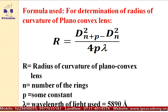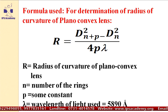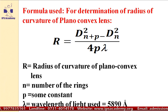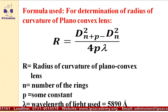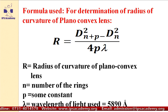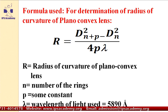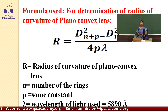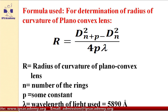So R is the radius of curvature, n is the number of the ring from fifth to 14th which we have calculated in this experiment, p is a constant used for the calculation, and lambda is the wavelength of light used, that is 5890 Angstrom.